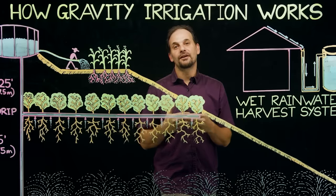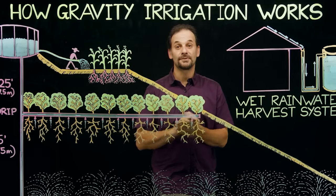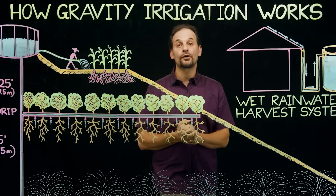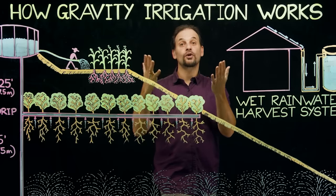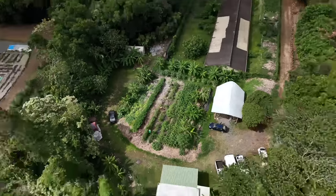So there you have it, a broad survey of gravity irrigation principles and systems. You can now use the innate properties of water and gravity to do the work for you. Are you ready to transform deserts, create lush backyards, and feed communities?